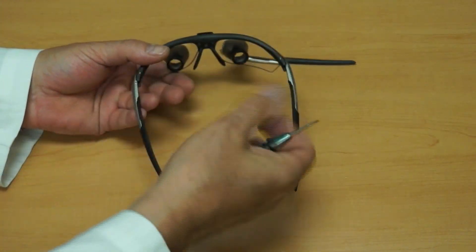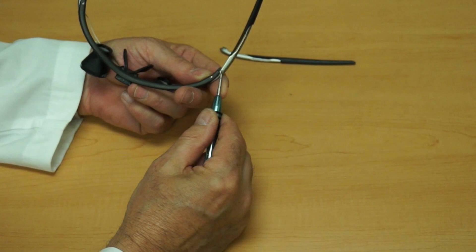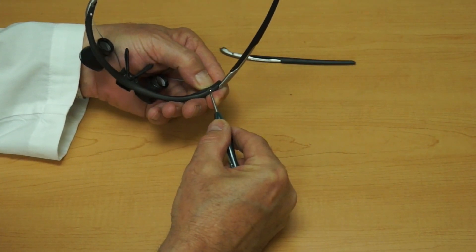You'll begin by taking the screwdriver that came with your kit, not the temple screw but the hinge screw.